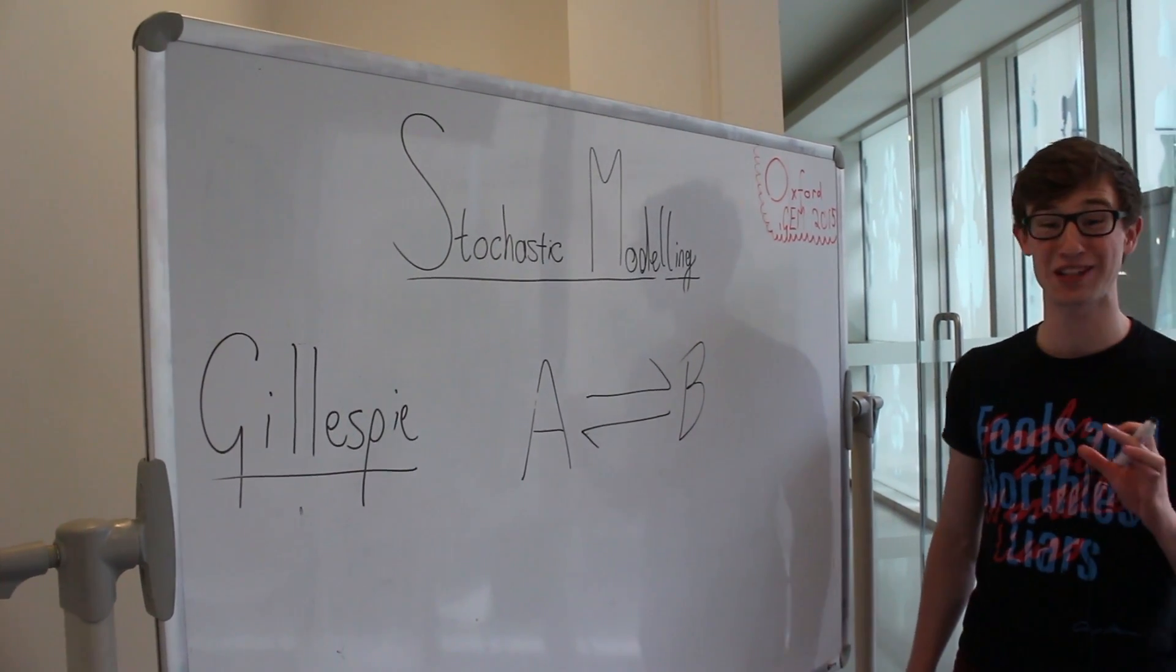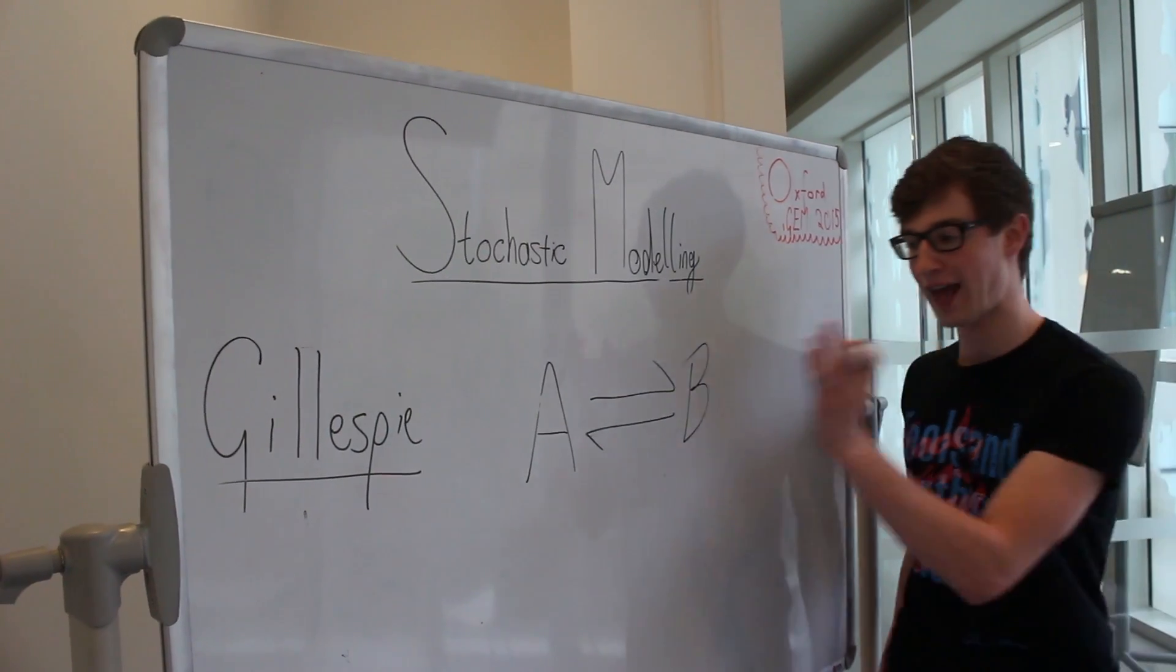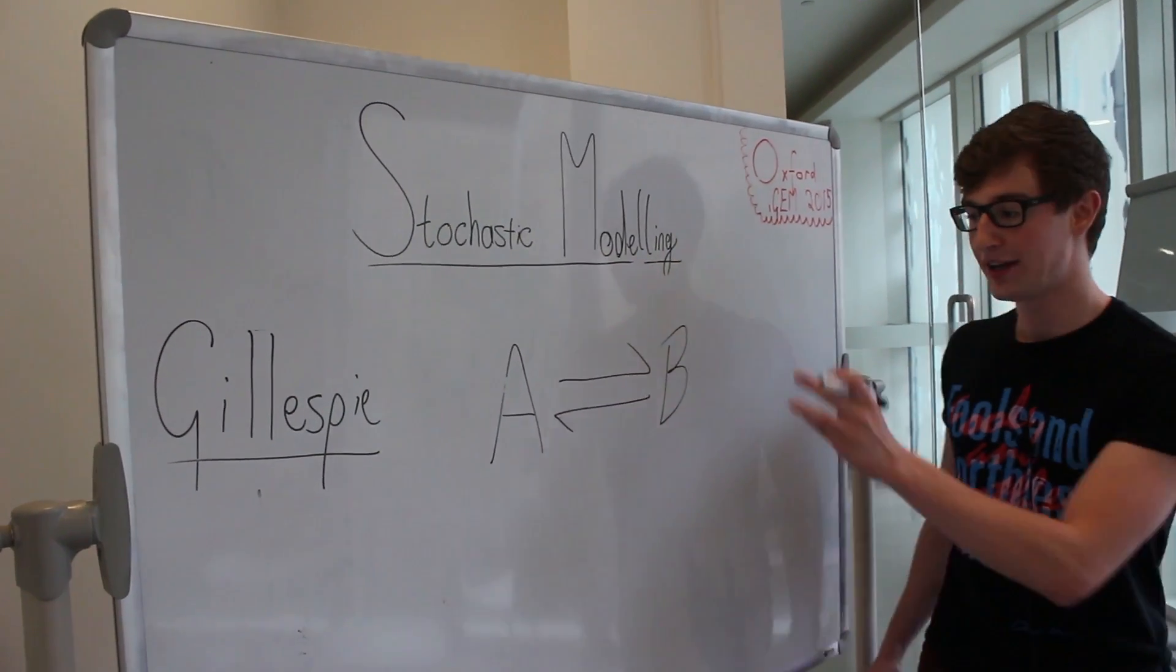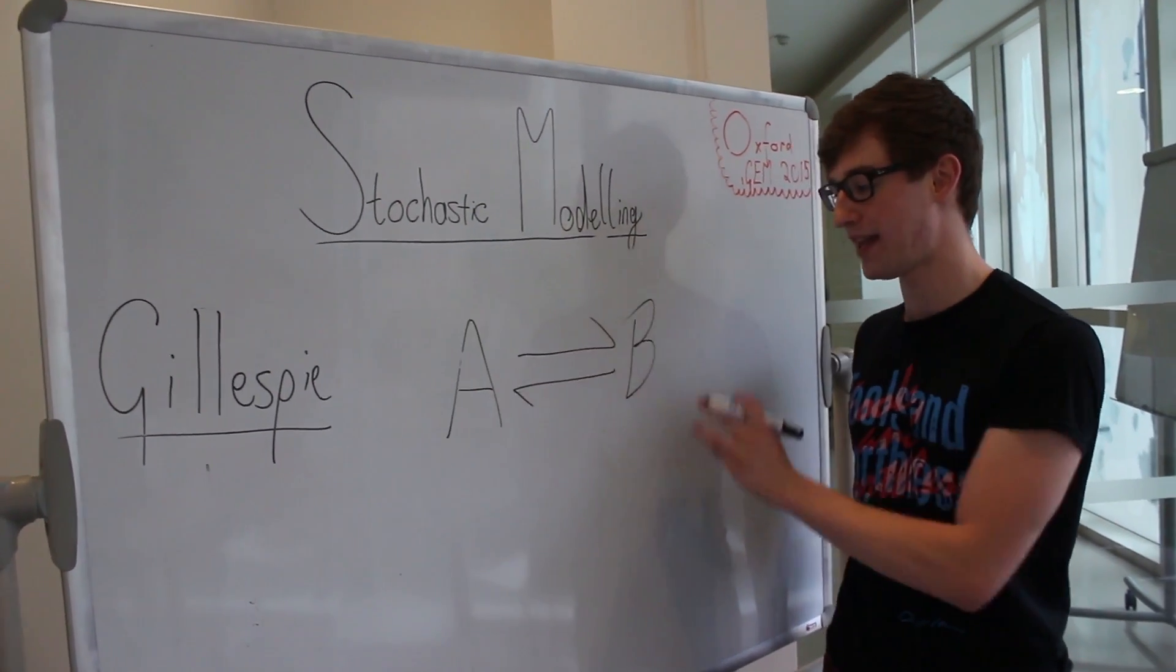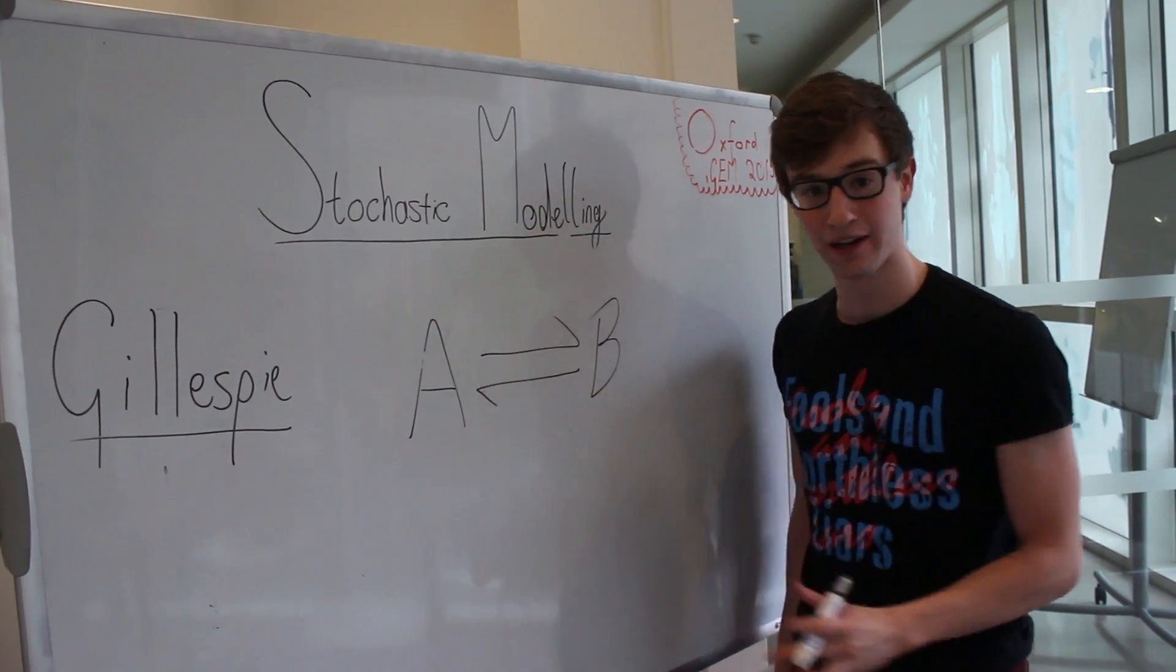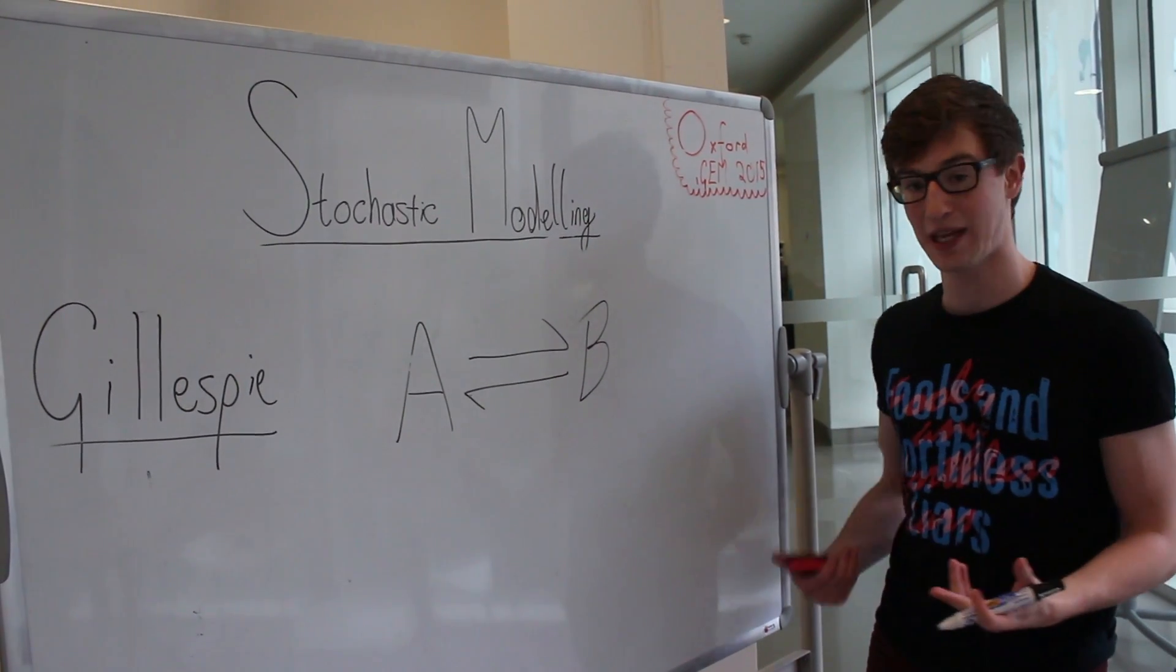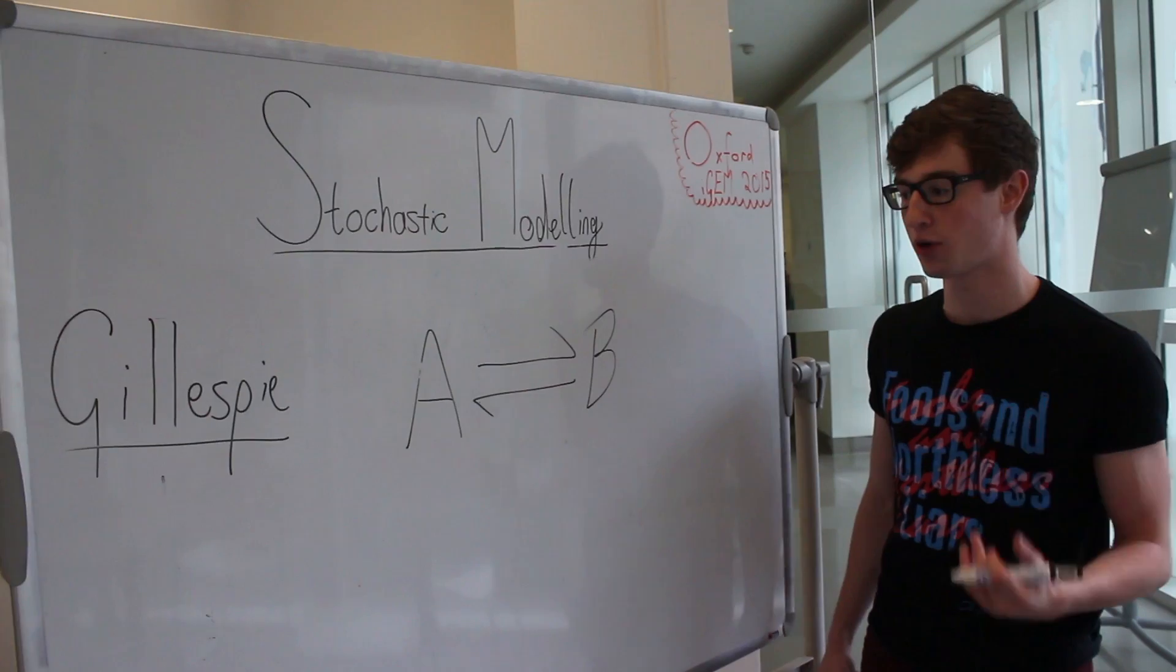It's a method for modeling systems stochastically and the best way to look at it is to take an example. We'll try and take a simple one. We'll take a system which contains two types of particles, A and B, and A can react to form B and B can react to form A, and we start with a certain amount of A and a certain amount of B and we want to see how our system evolves.